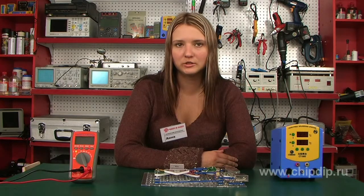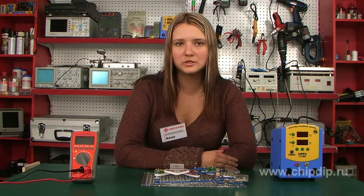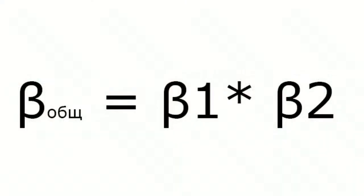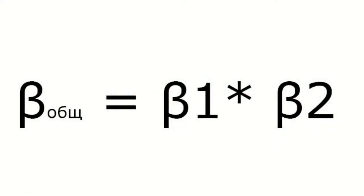If you join two transistors in one circuit, the total current gain will equal the product of the betas of each individual transistor.